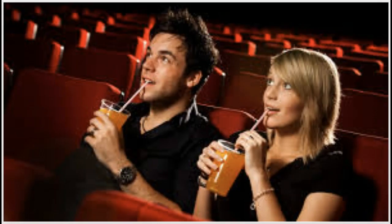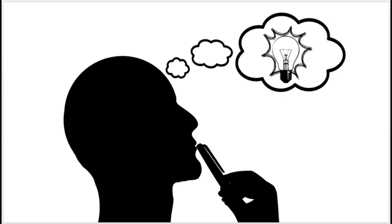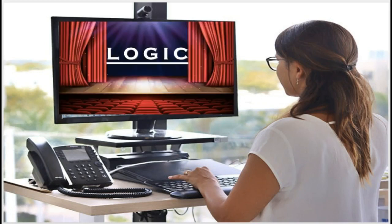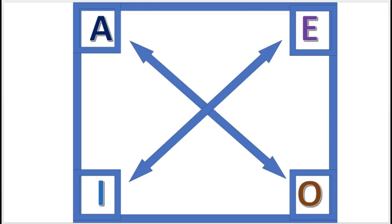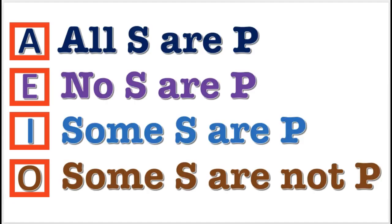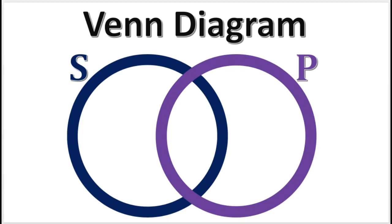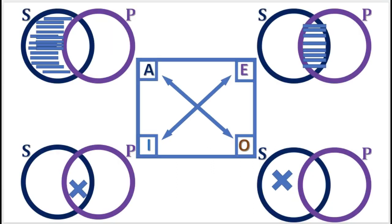Ladies and gentlemen, welcome back to logic. The modern square of opposition is the topic of this video. In order to understand this video, you may have to watch my previous videos on logic. Now the modern square of opposition looks like this, and these letters represent the four standard form categorical propositions. When we add Venn diagrams to the modern square of opposition, it looks like this.